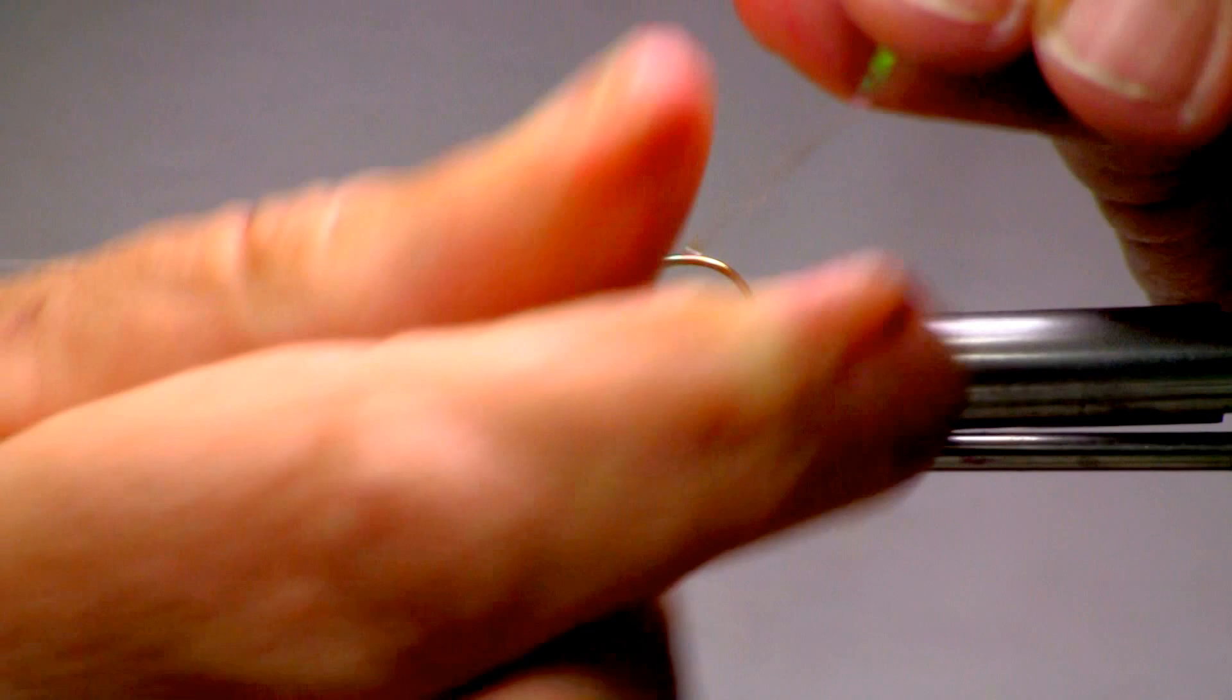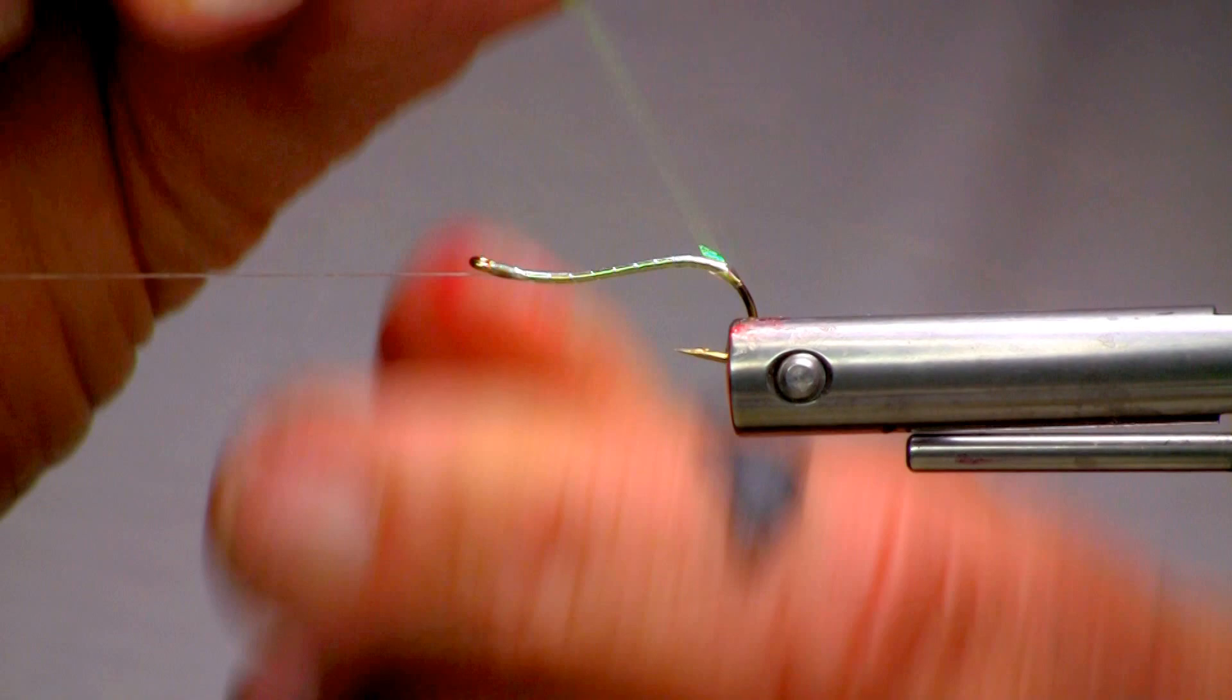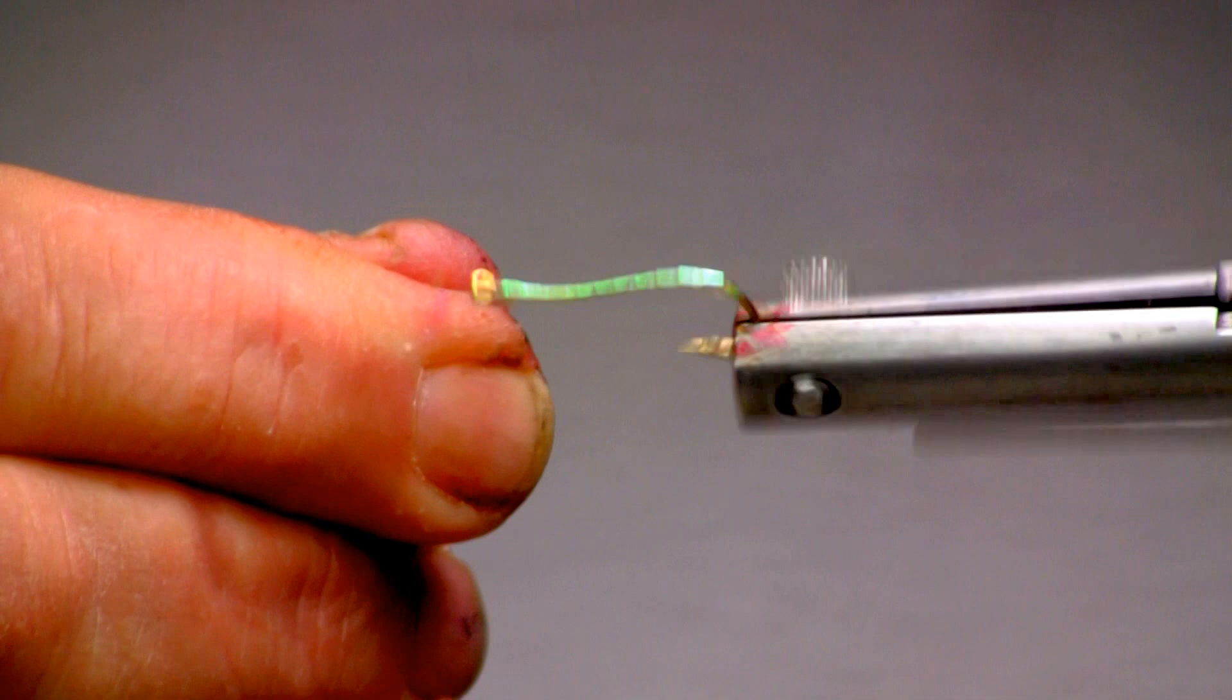Rotary vise is handy for work like this, but you can certainly hand over hand it. And I like coming down into, well into the bend of the hook. And then we're turning back up the hook shank to right behind the eye of the hook.